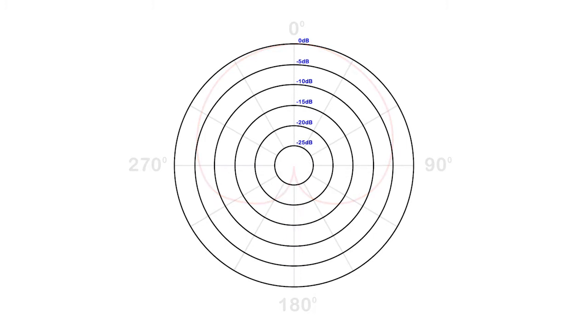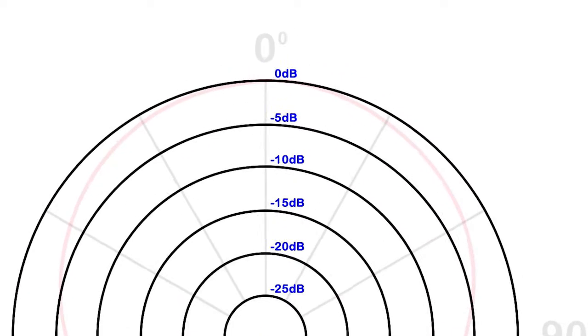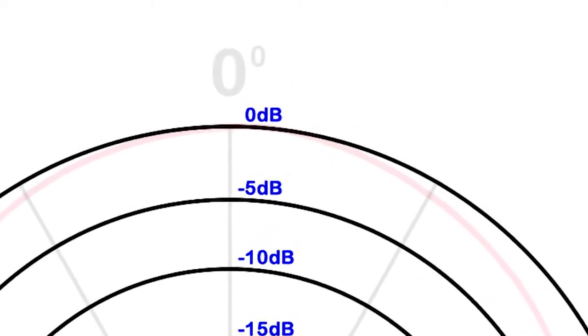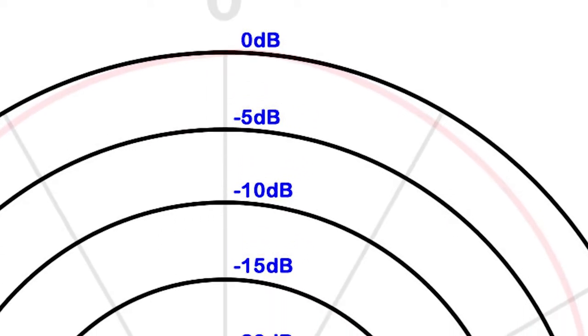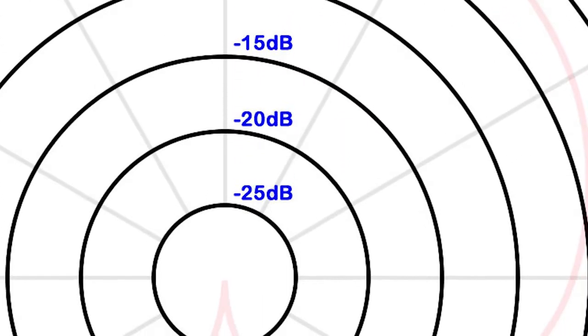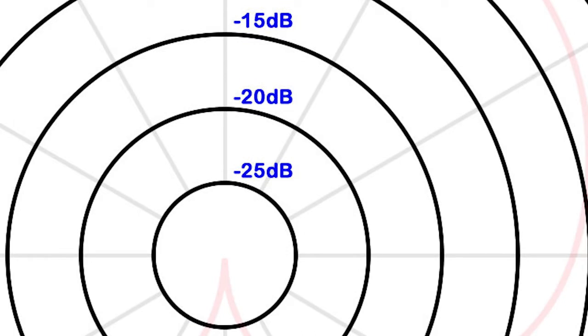The circle on the outside is marked 0dB. Now don't be confused, this represents the loudest or strongest level of sound expected from the microphone. The center circle is minus 25dB, or the quietest.